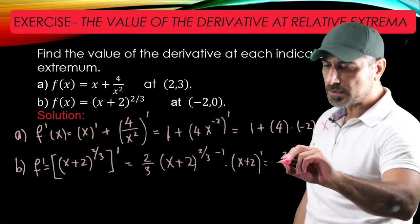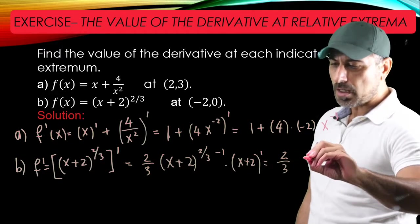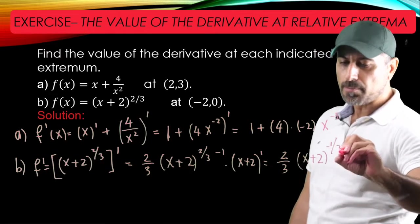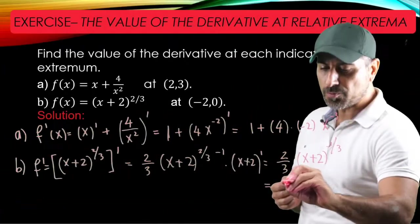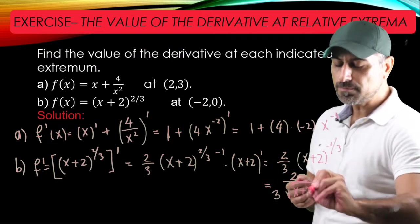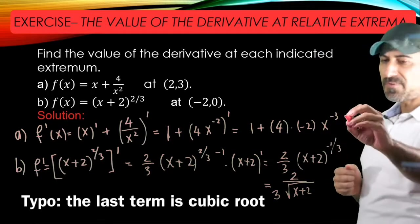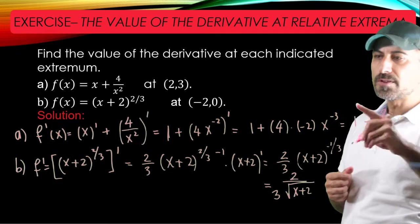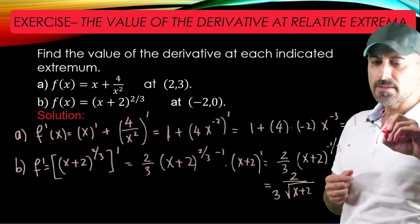So this is equal to 2 over 3 times the cubic root of x plus 2. Let's simplify this one, so this is 1 minus 8 over x cubed—that's 8 over x cubed.